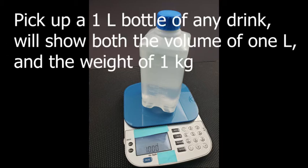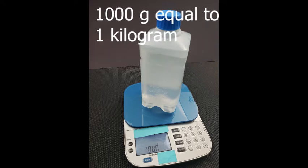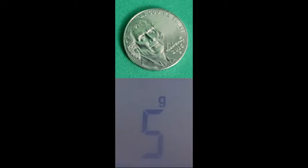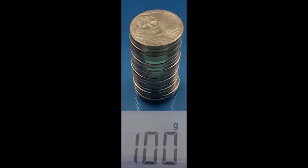One liter of water has a mass of 1 kilogram. Pick up 1 liter bottle of any drink; that will show you both the volume of 1 liter and the weight of 1 kilogram. 1,000 grams equal 1 kilogram. A nickel is 5 grams. 20 nickels are 100 grams.